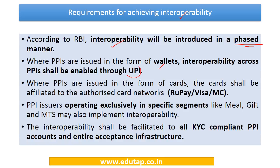Now for the technical requirements for achieving interoperability: according to RBI, interoperability is being introduced in a phased manner. Where PPIs are issued in the form of wallets, interoperability across PPIs shall be enabled through UPI — the Unified Payment Interface. If a PPI is in the form of a wallet, UPI is going to enable the interoperability.